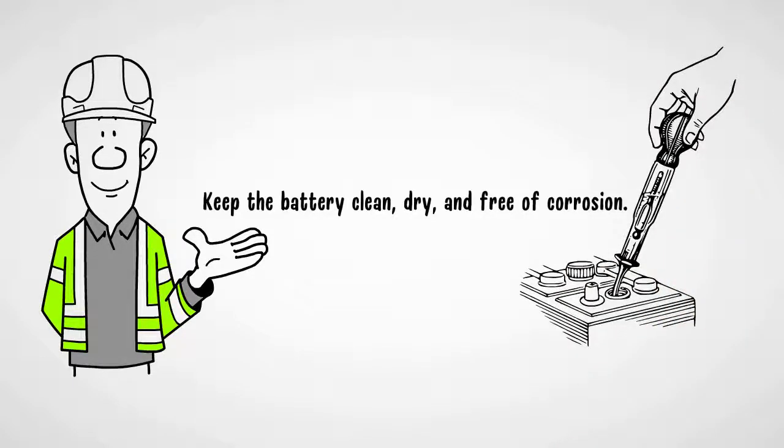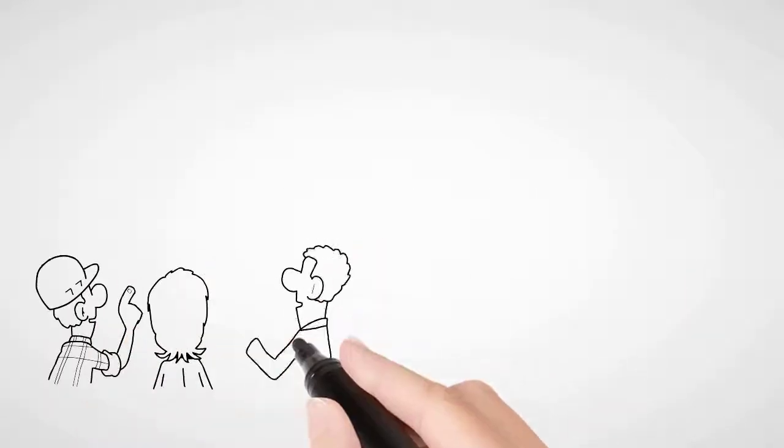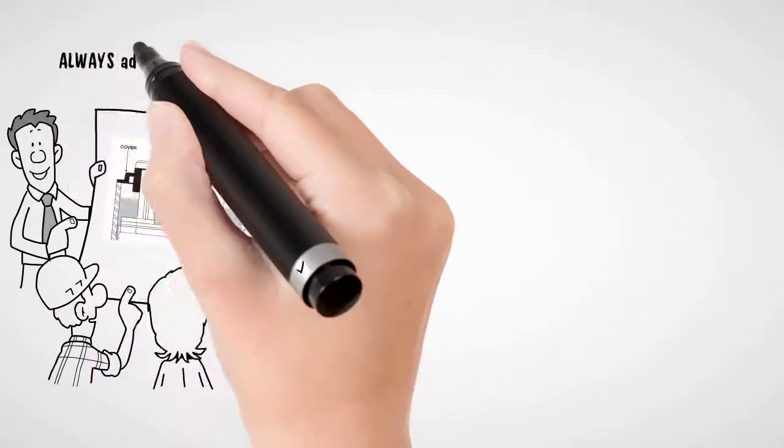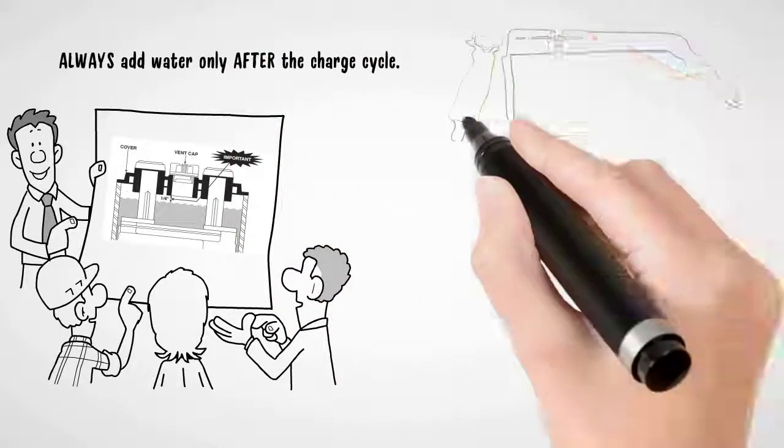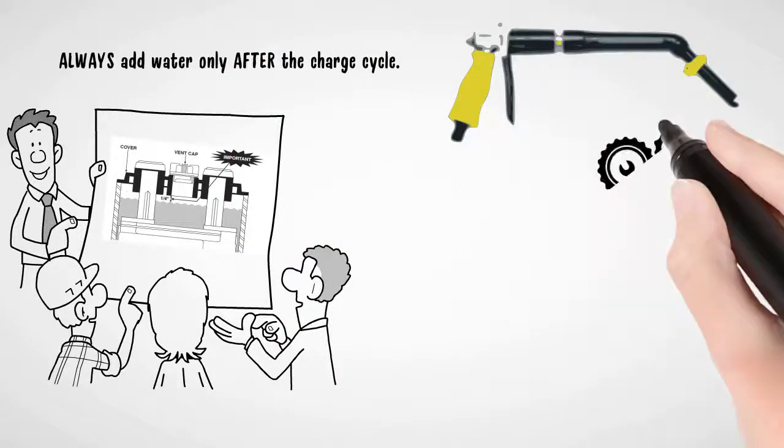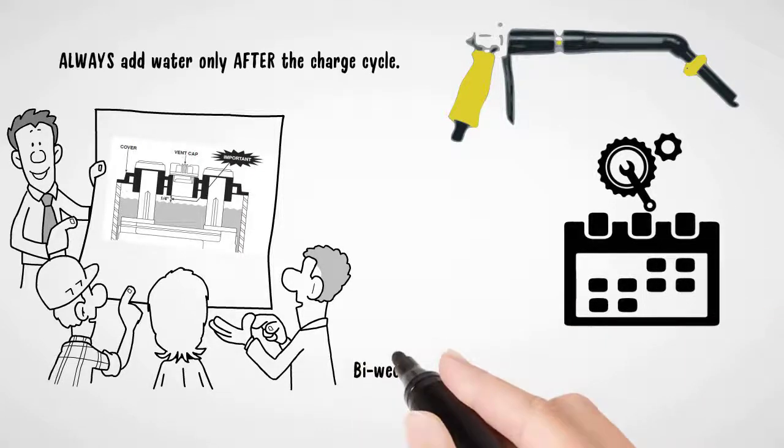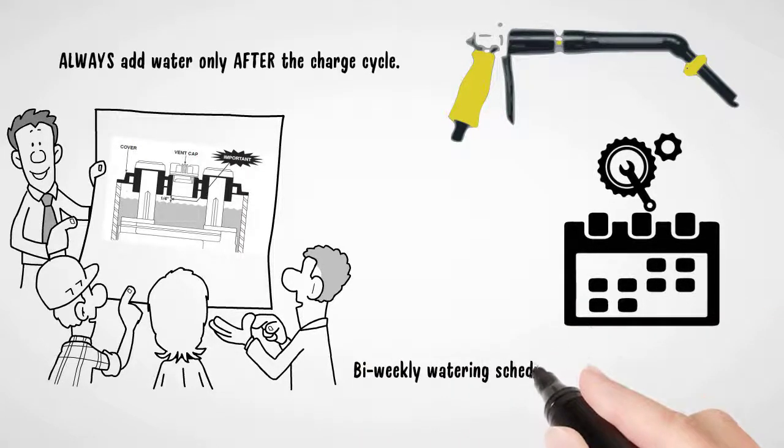Number 2: Maintain the correct water level, which is ¼ to ½ inch below the battery cap opening. Number 3: Always add water only after the charge cycle. Number 4: Set up a weekly or biweekly watering schedule to ensure proper water levels.